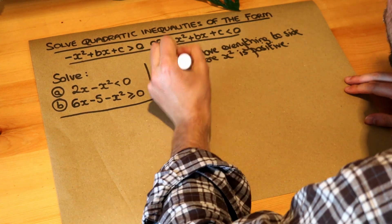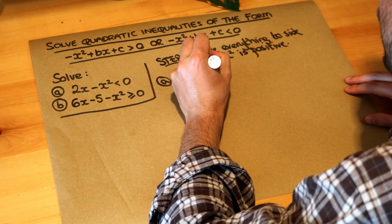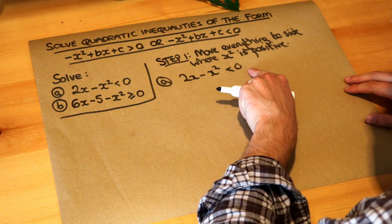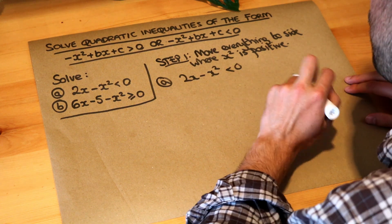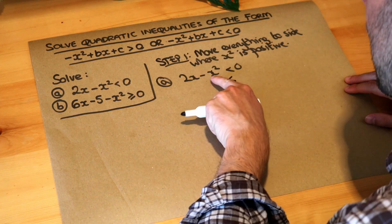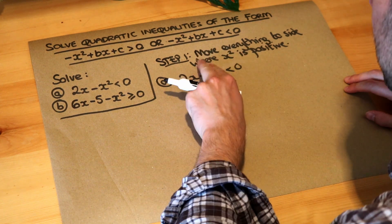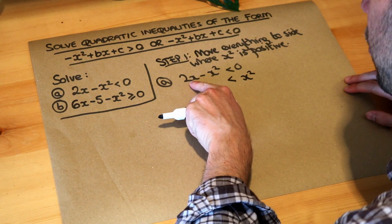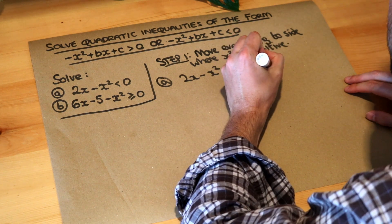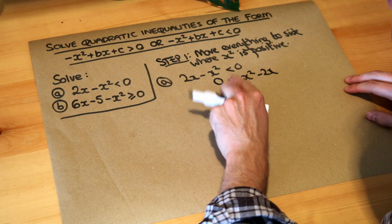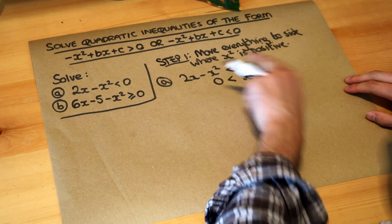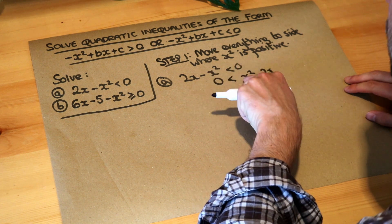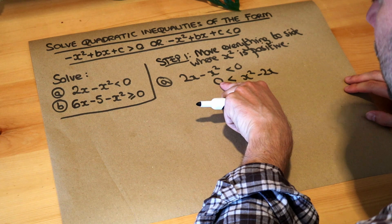Part a we've got 2x minus x squared is less than zero. Now at the moment the x squared term is negative. I want to move everything to the right hand side because then this minus x squared is going to become positive x squared. So I'm going to add x squared to both sides and we also want to get rid of that 2x. We're going to subtract 2x. So basically if you move everything to the other side each term gets negated, the 2x becomes minus 2x and the minus x squared becomes positive x squared.